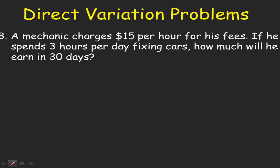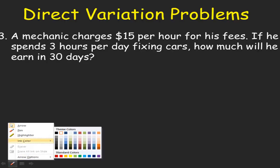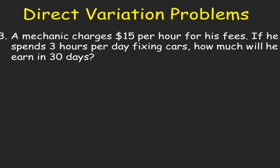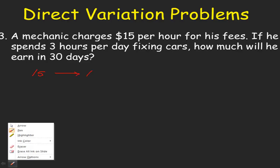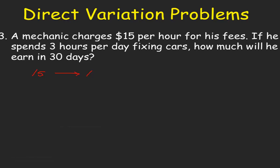Number 3. A mechanic charges $15 per hour for his fees. If he spends 3 hours per day fixing cars, how much will he earn in 30 days? So we have $15 for 1 hour. In equation form, this will be 15 is equal to k multiplied by 1. So we now know that k is equal to 15.